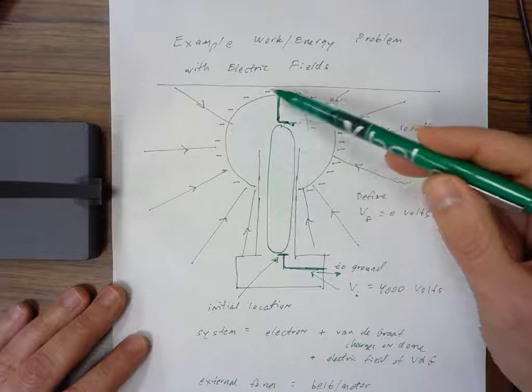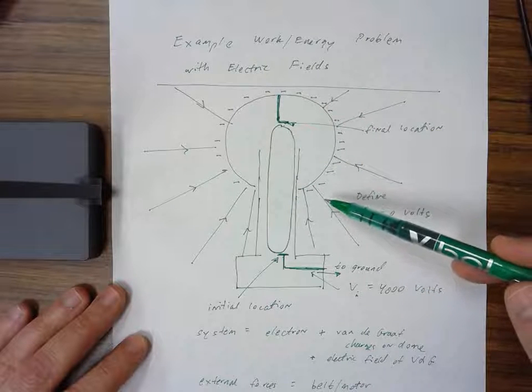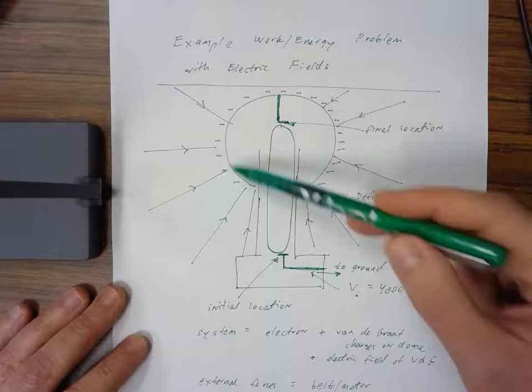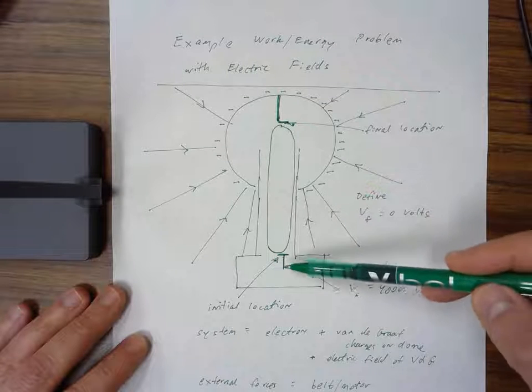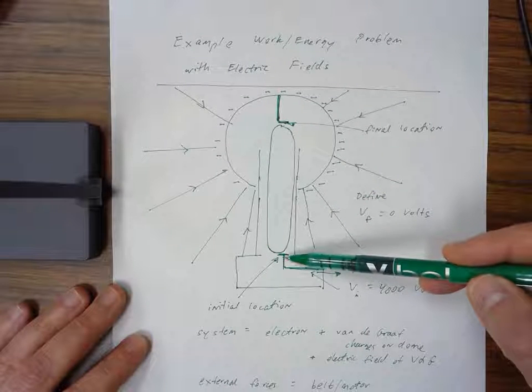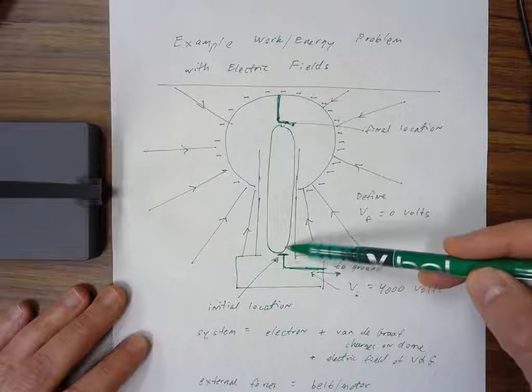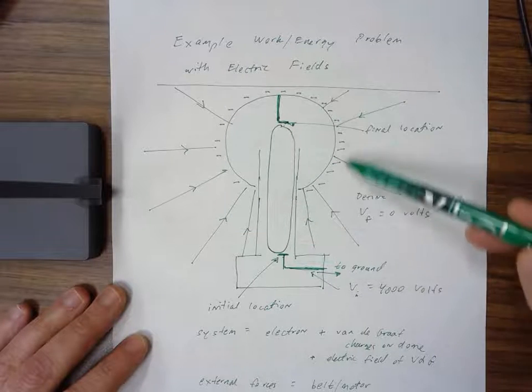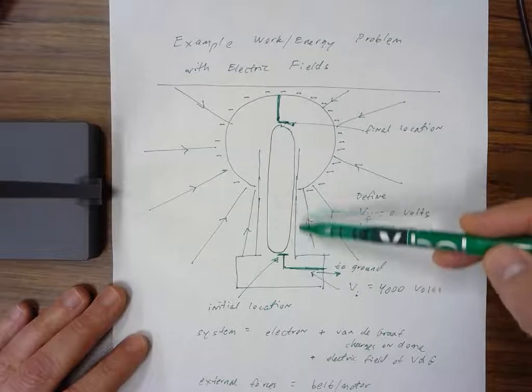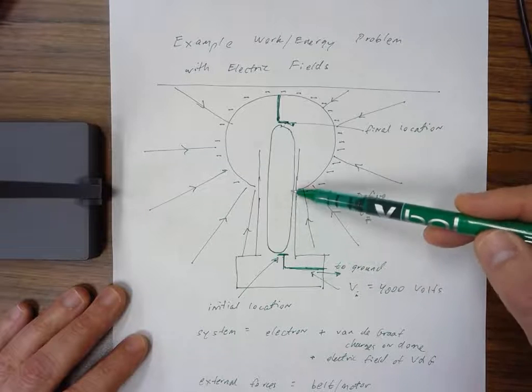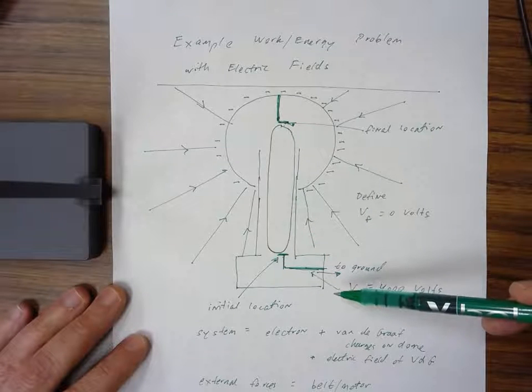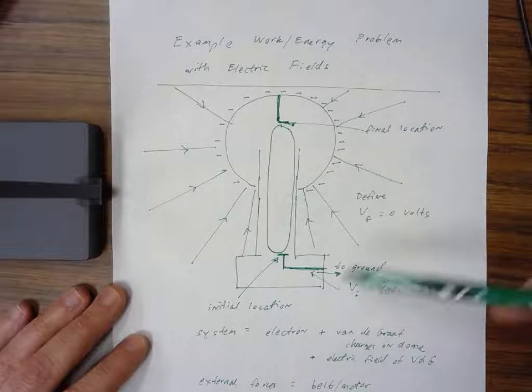Because the dome has already gotten a negative charge, that charge will be repelling the additional electron that I'm trying to add on. The more charge I put on the dome, the harder the motor and belt are going to have to work to put additional charge up there. We're going to calculate that work.